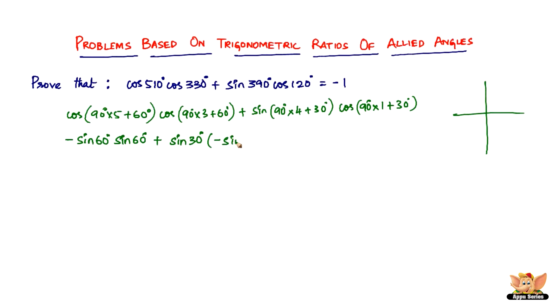So we have -sin 60° × sin 60° + sin 30° × (-sin 30°). That's (-√3/2) × (√3/2) + (1/2) × (-1/2), which equals -3/4 + (-1/4).